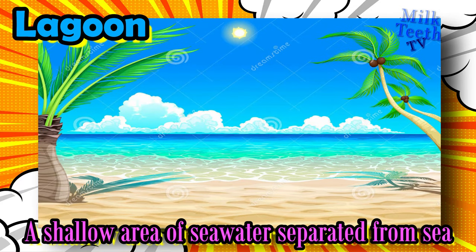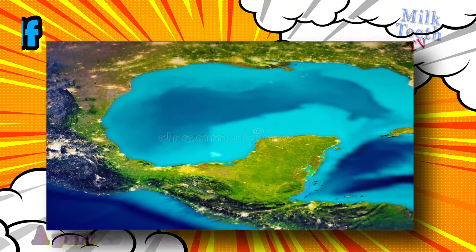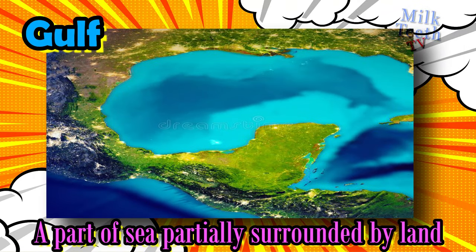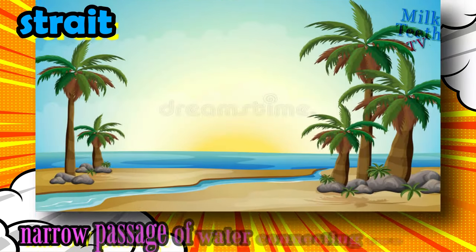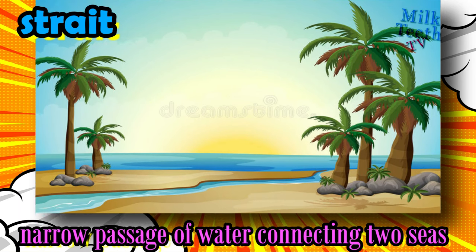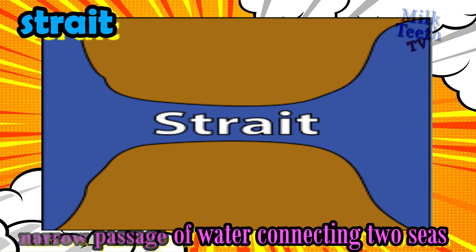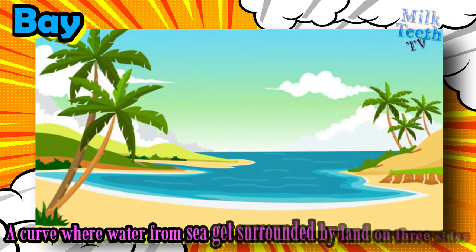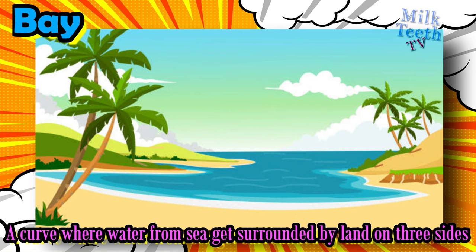Lagoon: a shallow area of seawater separated from the sea. Gulf: a part of the sea partially surrounded by land. Strait: a narrow passage of water connecting two seas. Bay: a curve where water from the sea gets surrounded by land on three sides.